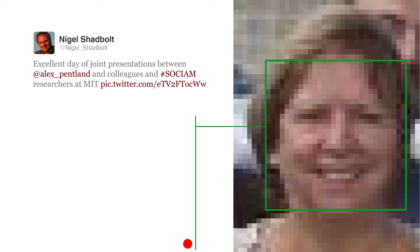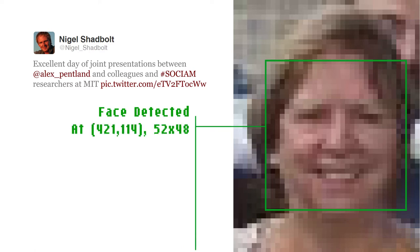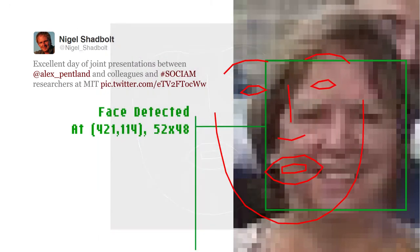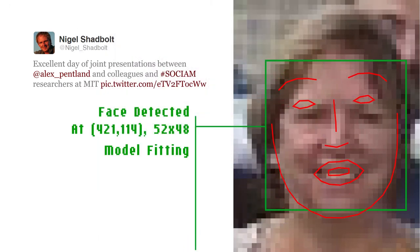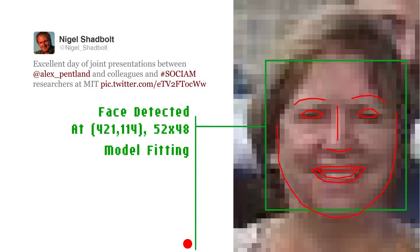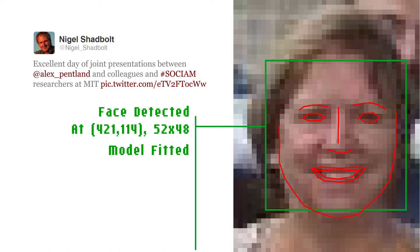In some specific cases this is better solved than others. For example, face detection algorithms have made big leaps forward in the last decade. Models can be fitted to faces which allow features to be generated for facial expressions, and that hints at the image's implied sentiment.